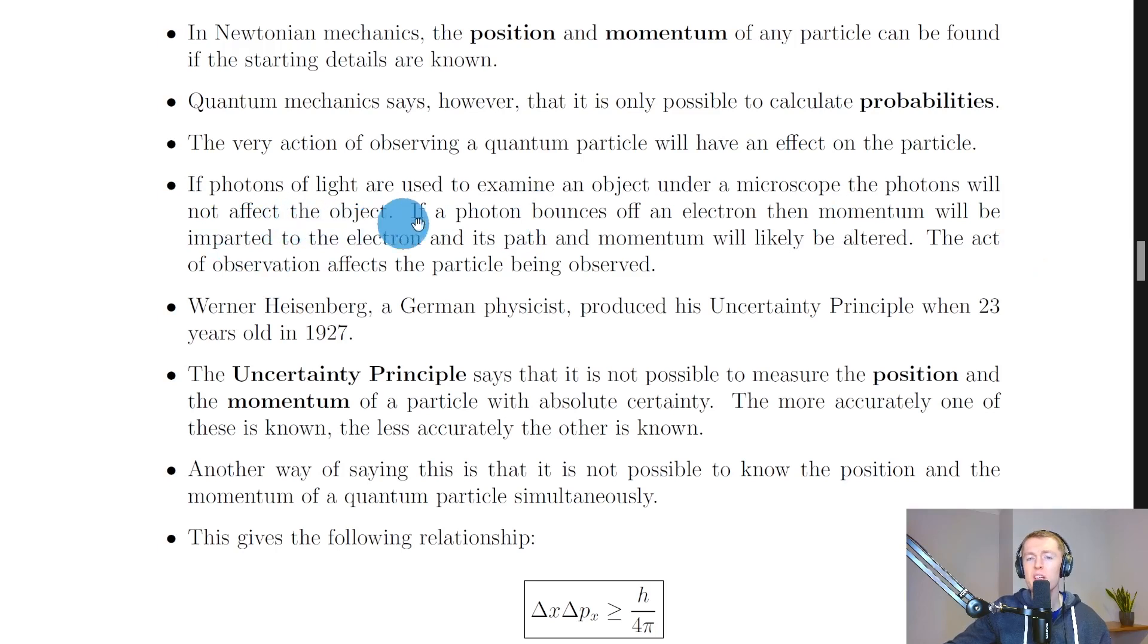For example, if photons of light are used to examine an object under a microscope, then the photons will not affect the object. If a photon bounces off an electron, then momentum will be imparted to the electron and its path and momentum will likely be altered. The act of observation affects the particle being observed.